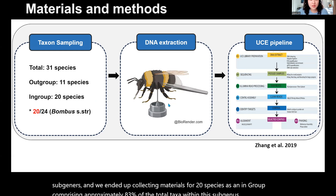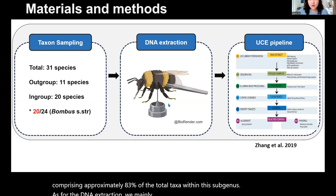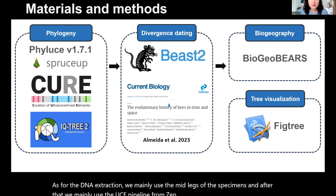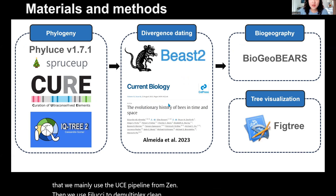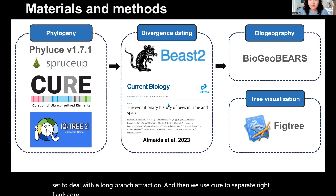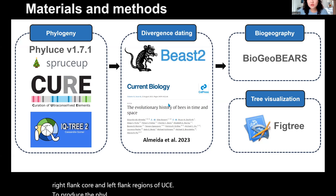As for the DNA extraction, we mainly used the mid-legs of the specimens. After that, we used the UCE pipeline from Zhang et al. Then we used Phyluce to demultiplex, clean, and align the sequences, as well as spruceup to deal with long branch attraction. And then we used CARP to separate the right flank, core, and left flank regions of UCE. To produce the phylogenetic tree, we used IQtree2.